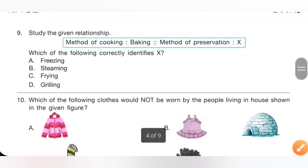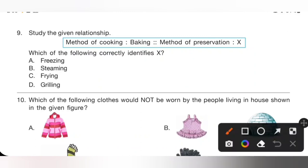Question 9: Study the given relationship: method of cooking is baking; method of preservation for eggs is blank. Options: A. Freezing, B. Steaming, C. Frying, D. Grilling. Steaming, frying, and grilling are methods of cooking, so freezing is the method of preservation of food. Option A, freezing, is the correct answer.